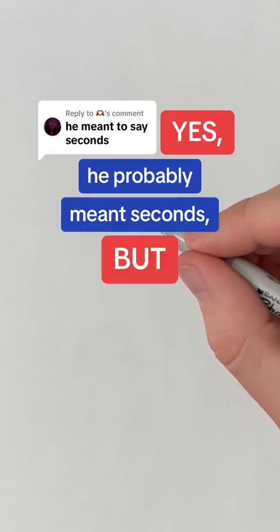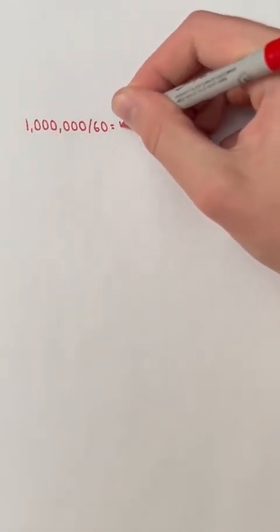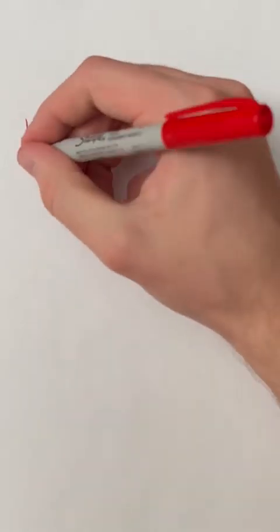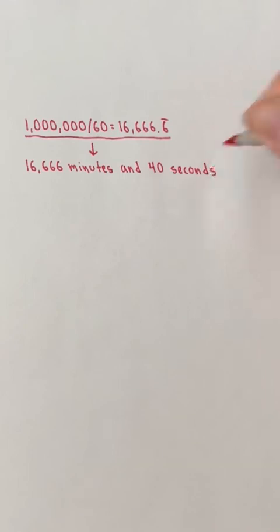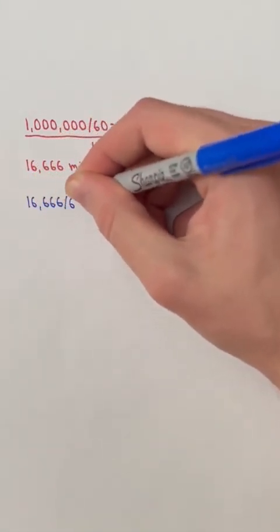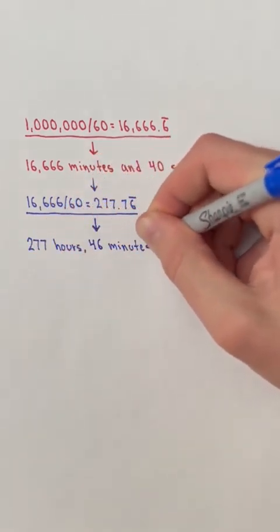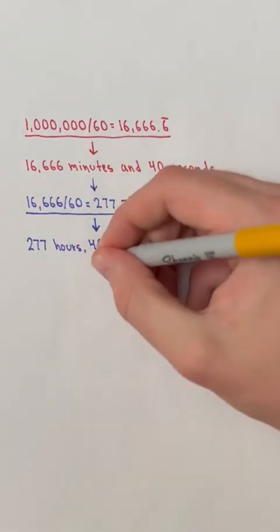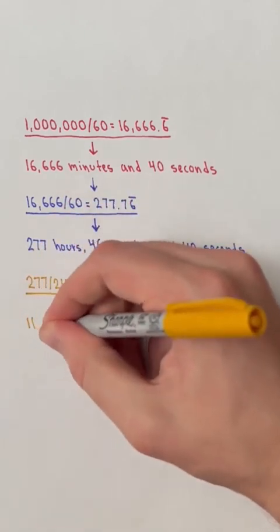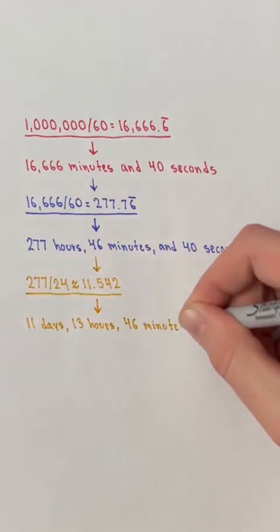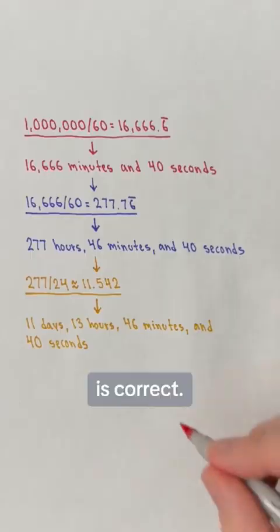Yes, he probably meant seconds, but he could have worded his sentences better. We can divide 1 million by 60 to see that 1 million seconds is 16,666 minutes and 40 seconds. Then, we can divide 16,666 minutes by 60 to see that it's 277 hours, 46 minutes, and 40 seconds. Lastly, we can divide 277 by 24 to see that it's 11 days, 13 hours, 46 minutes, and 40 seconds. So, you would be a millionaire within 12 days is correct.